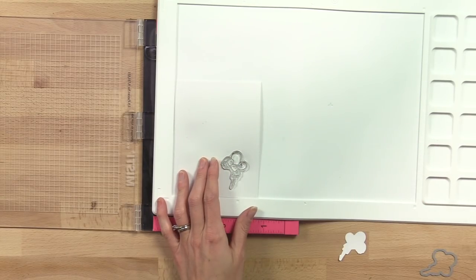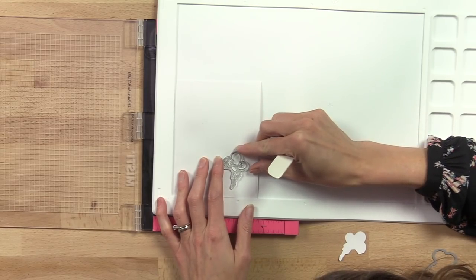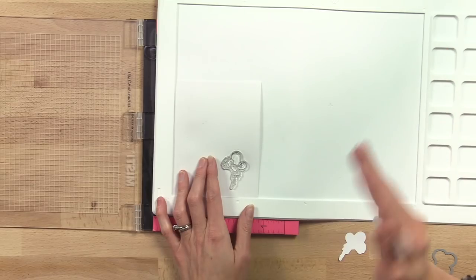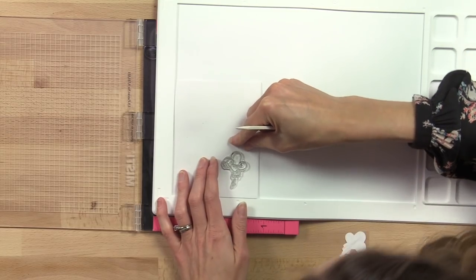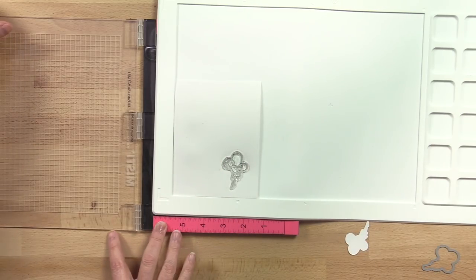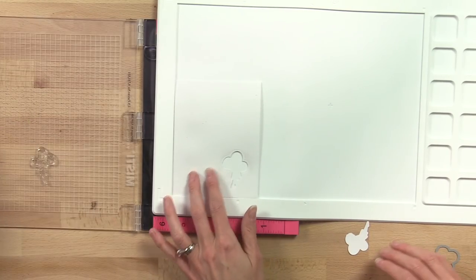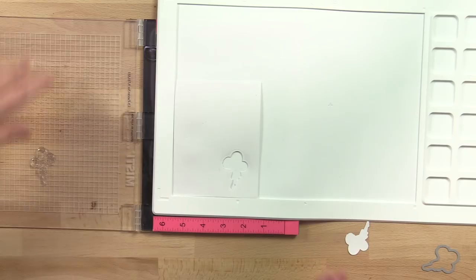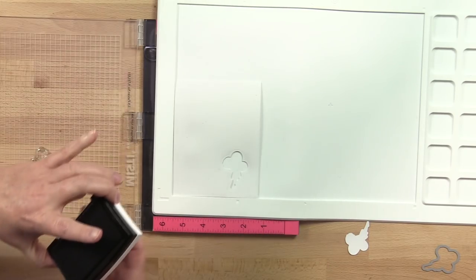We're going to take our stamp and position it in the negative space. I'm just going to look side to side here and make sure that that stamp is perfectly centered inside that opening. That looks good. Go ahead and fold it over. Great.